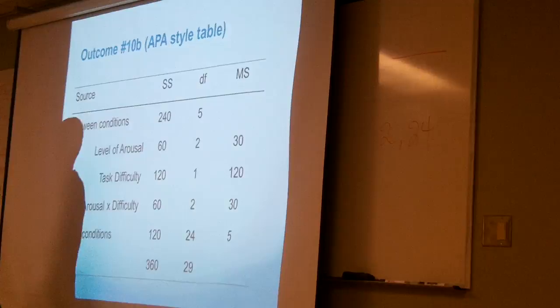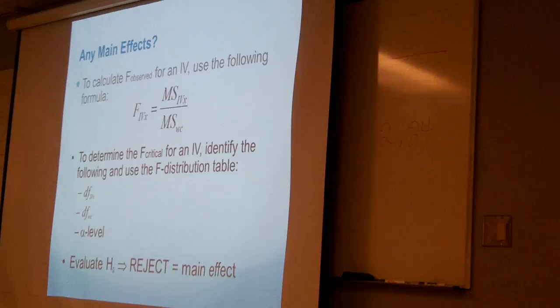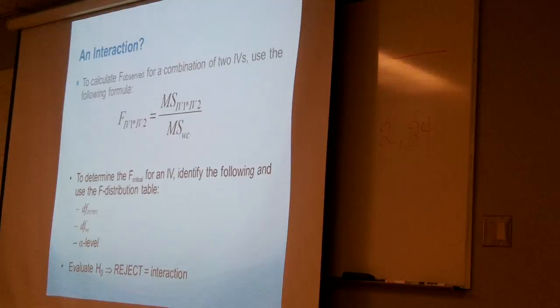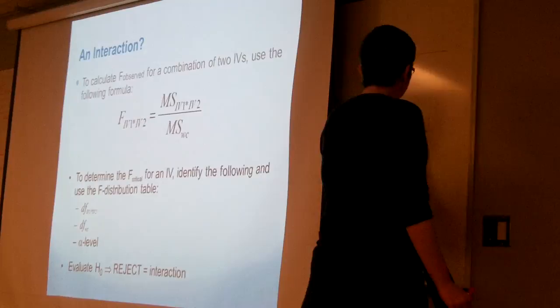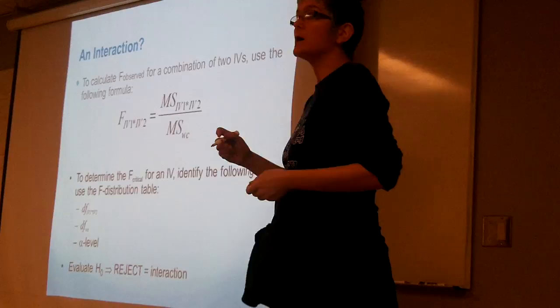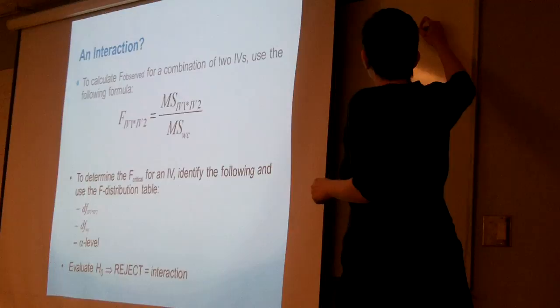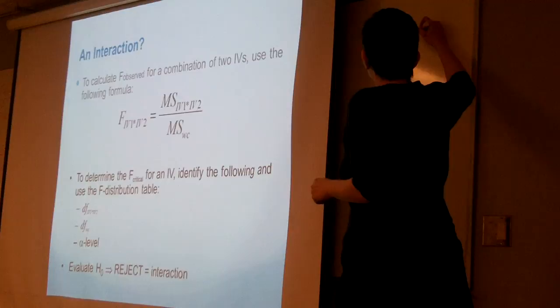You can figure out the formulas based on what you already know. For eta squared in independent groups ANOVA, the formula was sum of squares between conditions divided by sum of squares between conditions plus sum of squares within conditions. Given what we've already done today with the factorial ANOVA, see if you can make an informed guess about how to calculate eta squared for the factorial case.